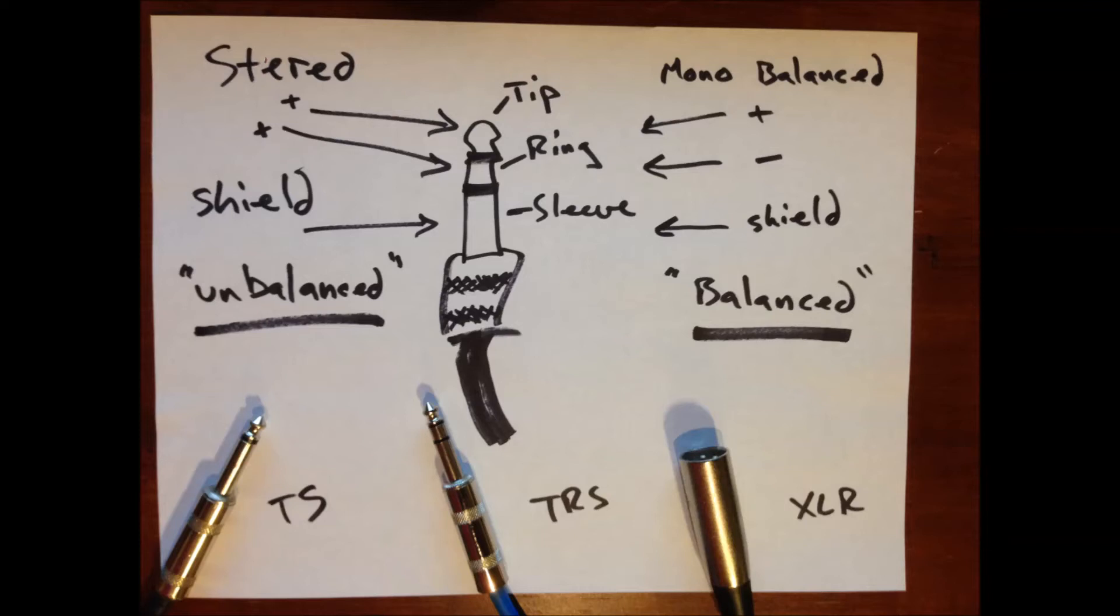If it's used as a mono balanced cable, the tip is the signal, the ring is the negative signal which actually cancels out any noise, and then the sleeve is the shielding of the cable itself. So they can be used in either way, and an XLR cable, actually, the three connectors in an XLR cable do the same thing as a TRS when it's used mono.